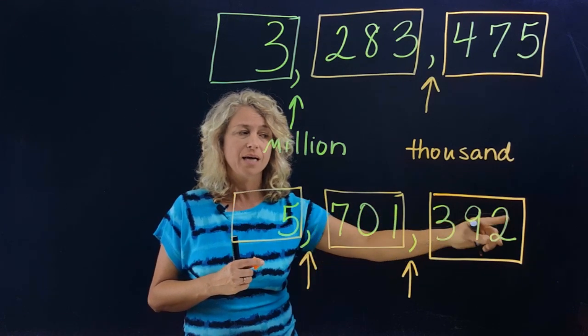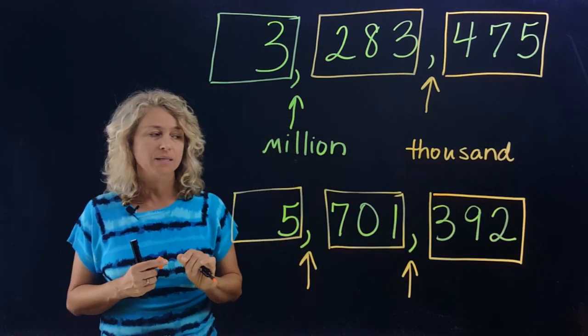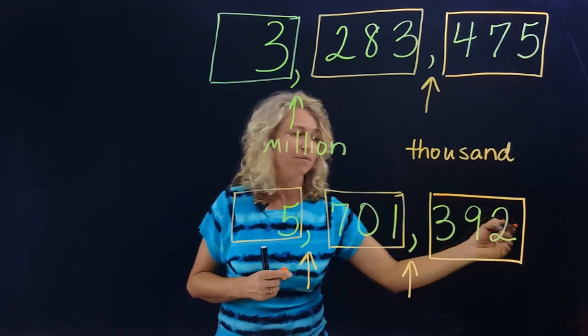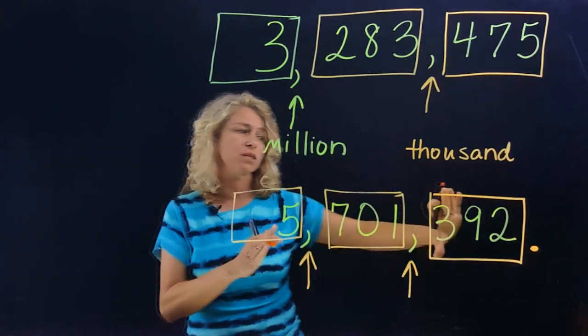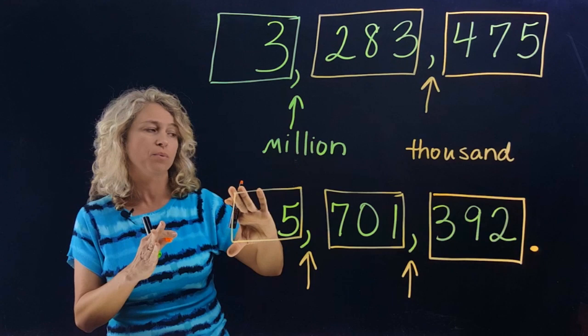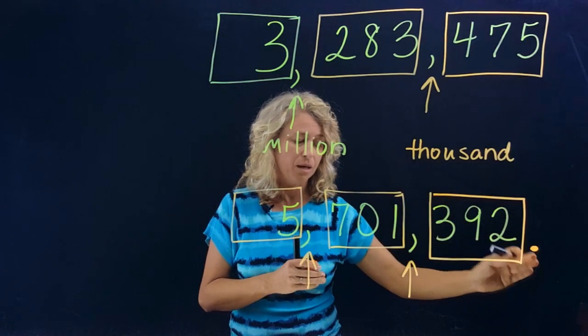But that is incorrect. We only use the word 'and' when we have a decimal number. And for now, boys and girls, this is just a whole number, so we will not use the word 'and' until we have the decimal.